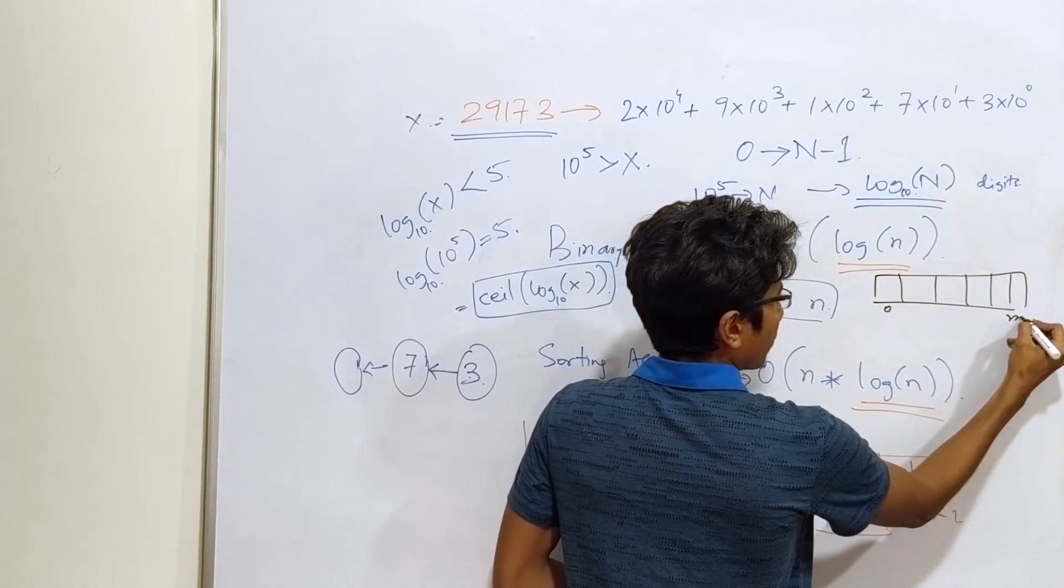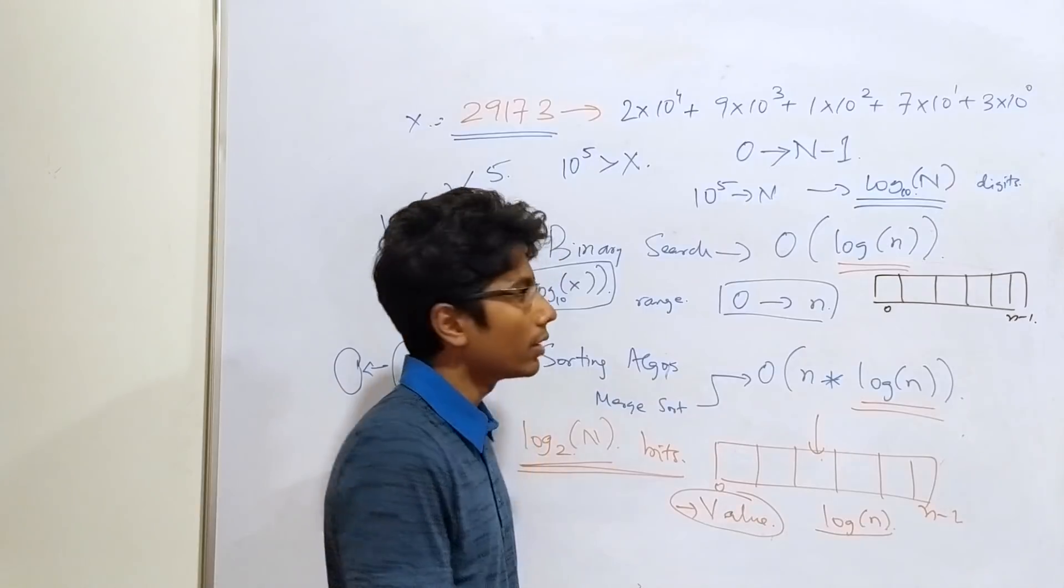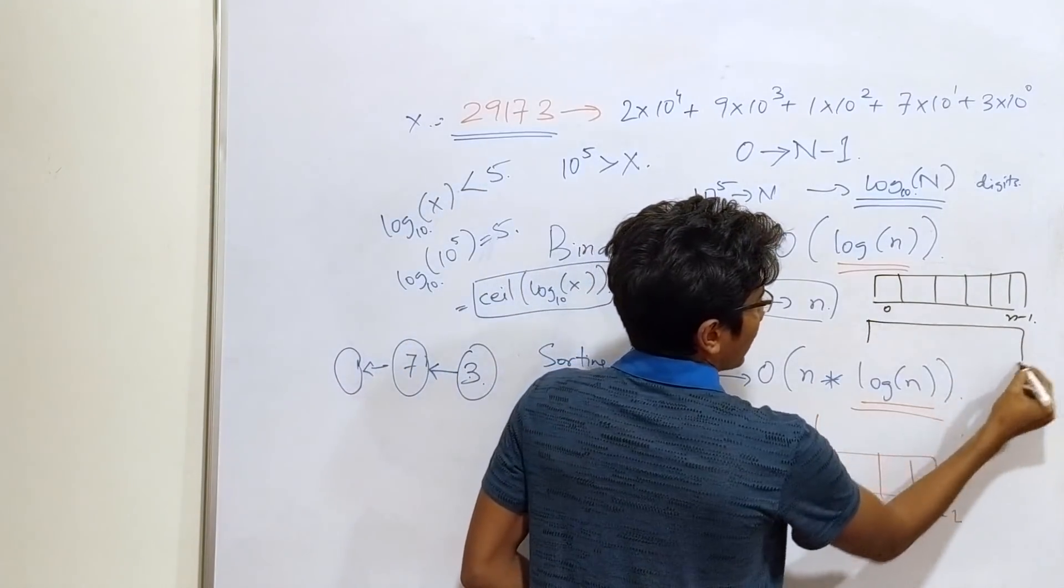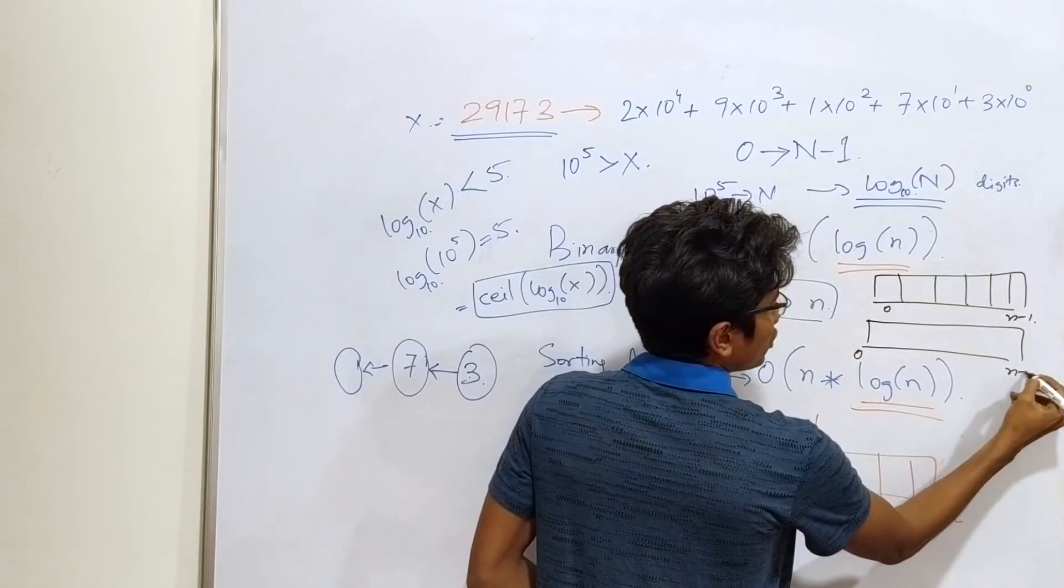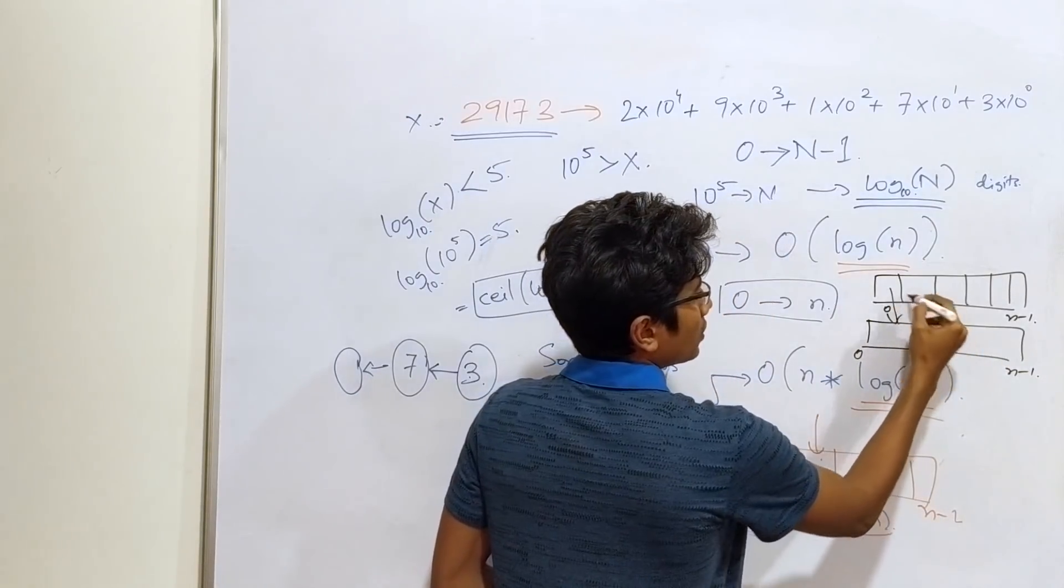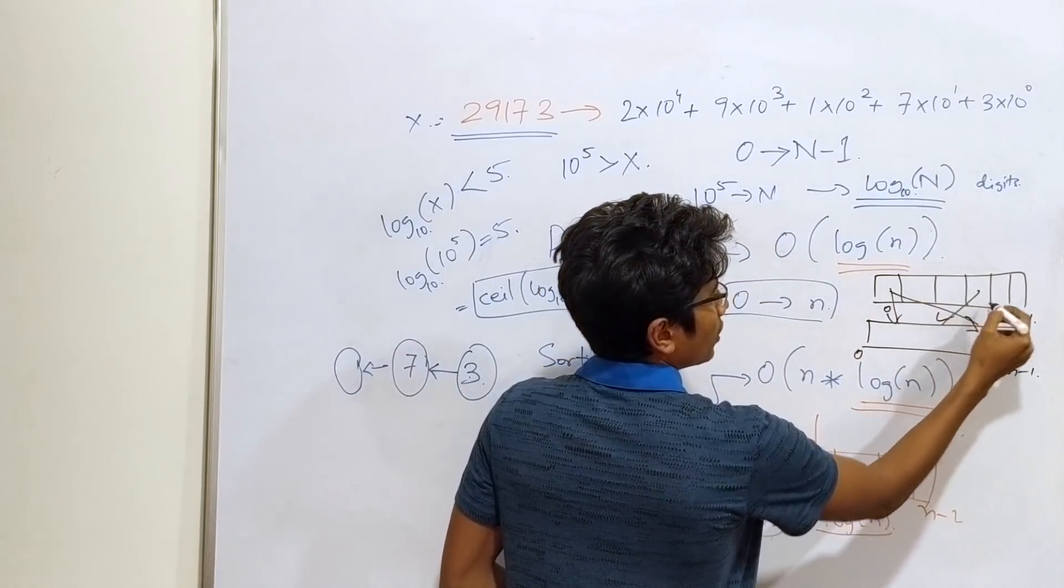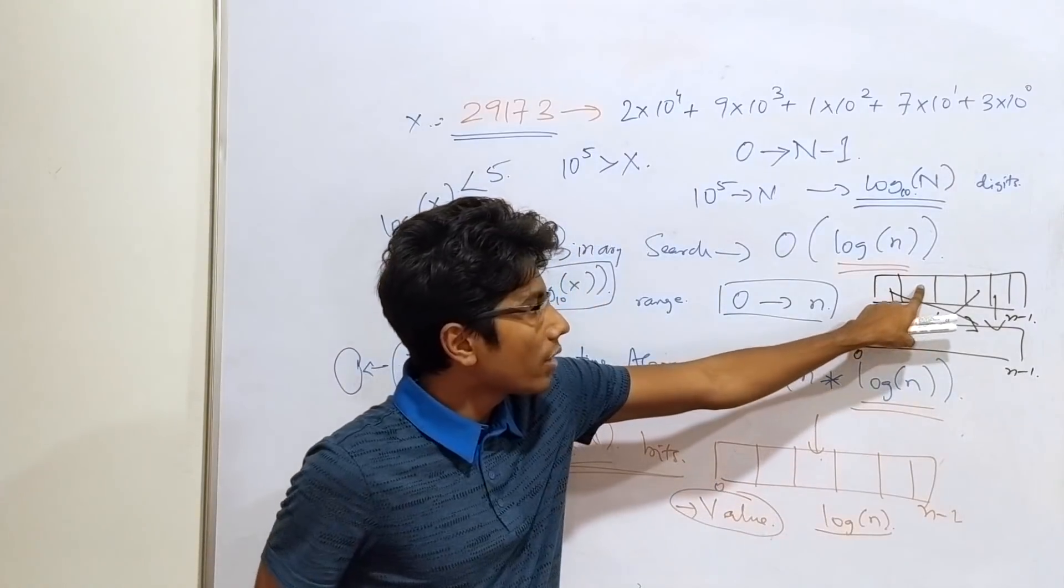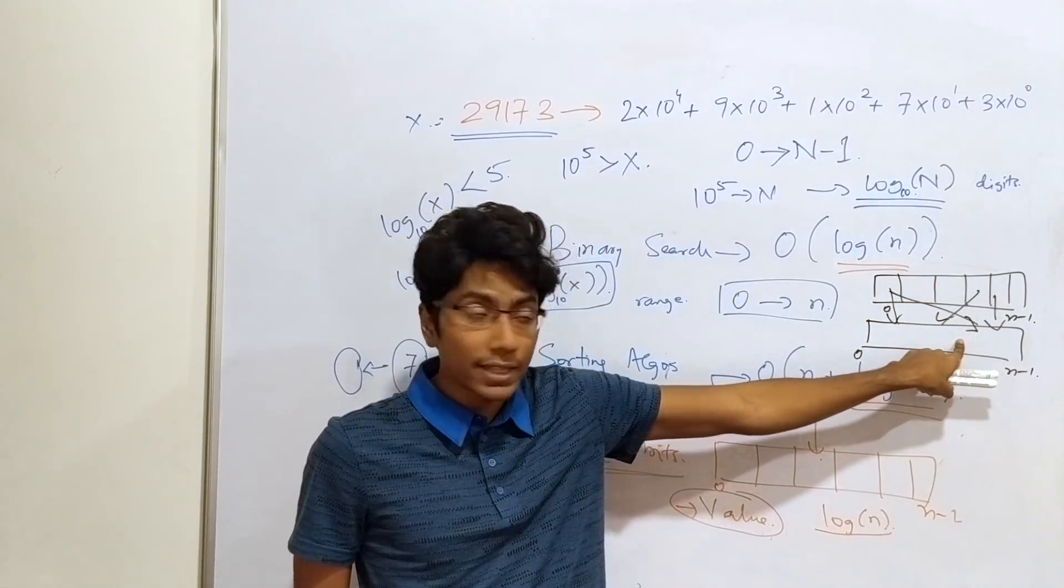Alright? And the index is from 0 to n-1 in this array because there are n elements. And the output is from 0 to n-1. You need to map these elements to this array. Alright? Each element needs to be mapped to its corresponding index in the sorted array.